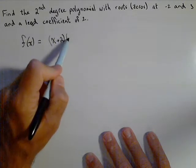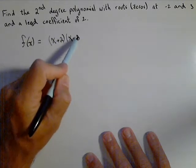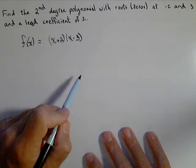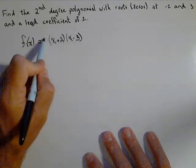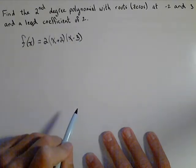If three is a zero, then x minus three has to be a factor. Last thing we know is it has to have a lead coefficient of two, so we can put a two out there.